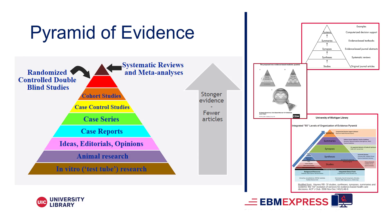The EBM pyramid is a popular way of visualizing the amount and hierarchy of medical literature. In the pyramid, the lowest levels represent evidence that is plentiful but not very strong for use in clinical decision making. As we move further up the pyramid, we move into clinical literature types with observational design, which is stronger evidence. Finally, at the very top, we find systematic reviews and meta-analyses, or our secondary literature.